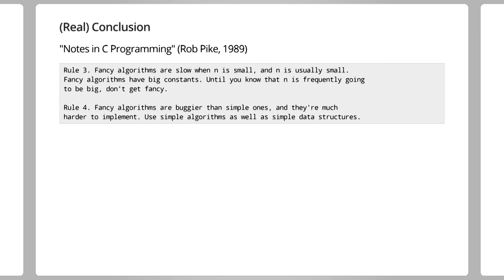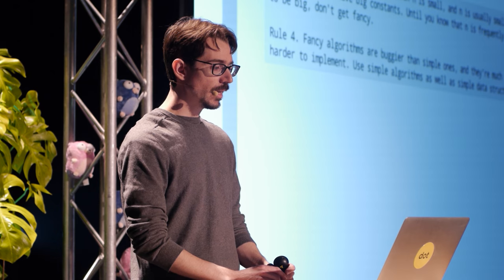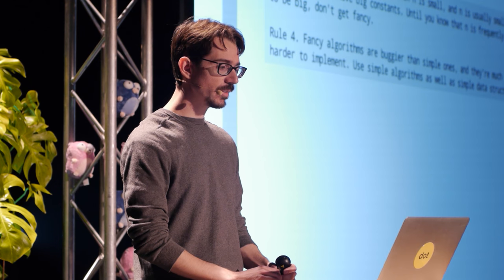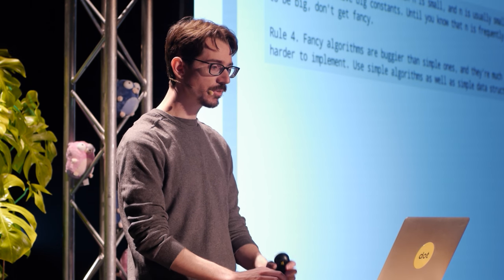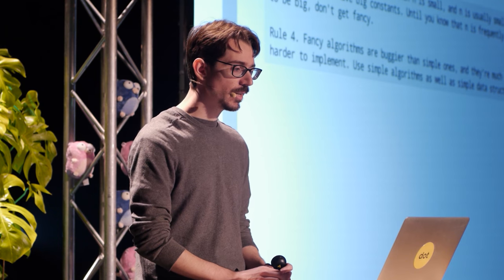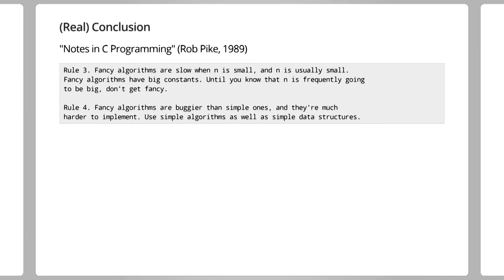Simple algorithms tend not to have too much baggage — a list of things, maybe a counter or two. Simple algorithms tend to have predictable access patterns: scanning through arrays, copying values around. Here are some rules from Rob Pike's Notes on C Programming from 1989. The third one says: fancy algorithms are slow when n is small, and n is usually small. Fancy algorithms have big constants. Until you know that n is frequently going to be too big, don't get fancy. What n needs to be in order to be considered small is getting bigger all the time.